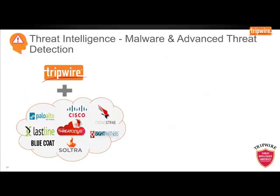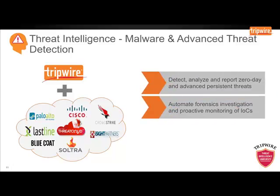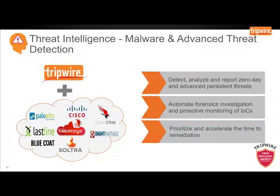With Tripwire, the integration with advanced malware analysis partners such as Cisco, Palo Alto Networks, Checkpoint and Lastline enables real-time detection, analysis and verification of known, zero-day and advanced threats. The integration with threat intelligence indicators of compromise providers such as CrowdStrike, iSight Partners and Sultra enables proactive monitoring as well as forensic capability for any previous compromises, helping customers answer the question: have I been compromised and how long have I had this? With Tripwire's business context combined with this threat intelligence integration, customers can now prioritise and accelerate their time to detect and remediate known and zero-day advanced threats across their networks.